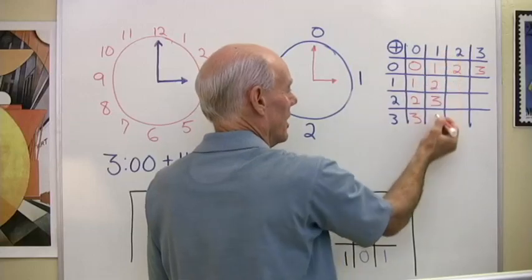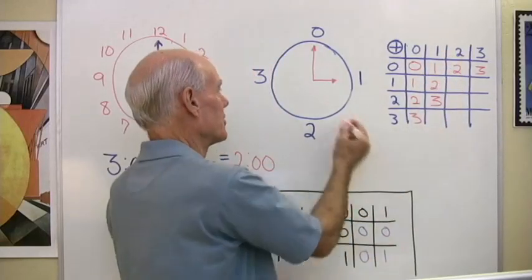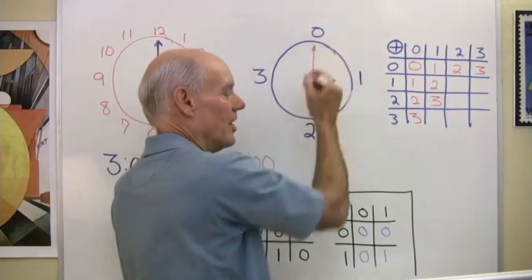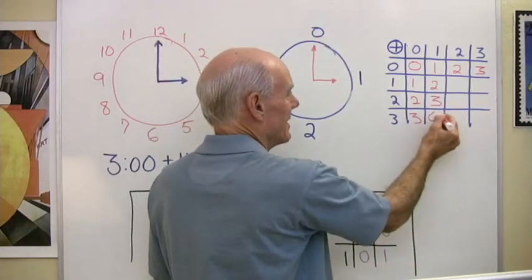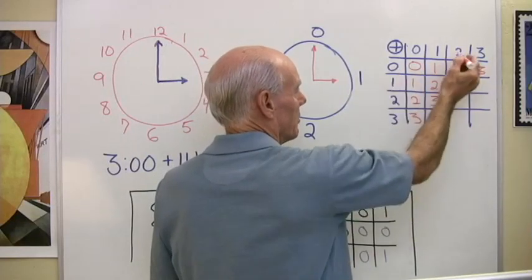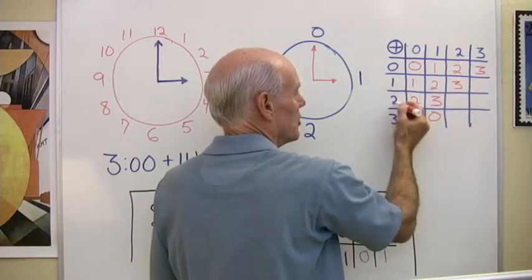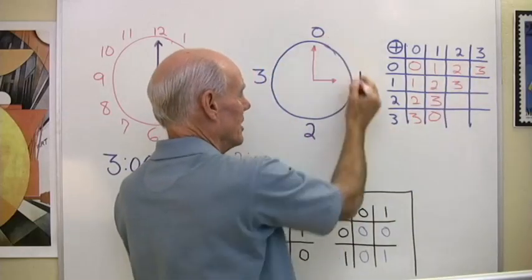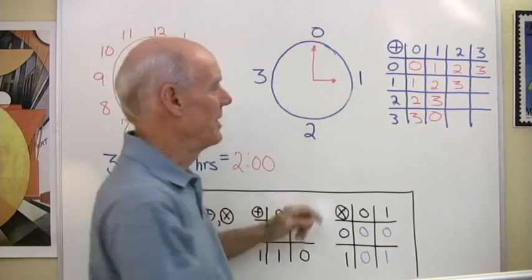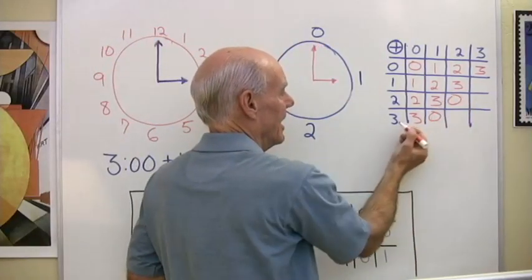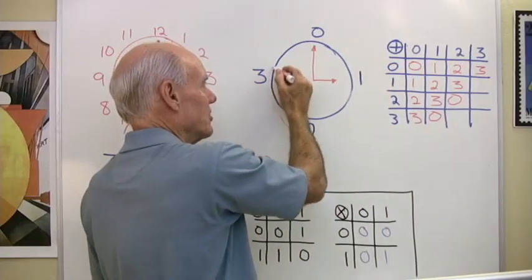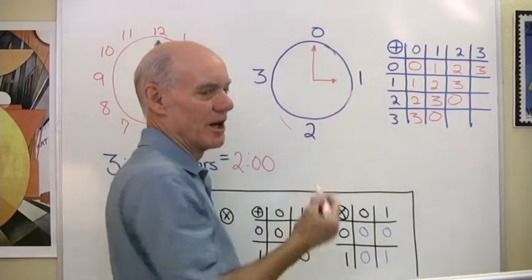Okay, let's go over here, 0, let's go 1 plus 2, that will be 3, 2 plus 2, okay here I am at 2, so I move to 2 and then I add 2 more hours, where do I end up? Back at 0. And then 3 plus 2, okay so I'm over here at 3 and then I add 2, 1, 2, where do I end up? At 1.